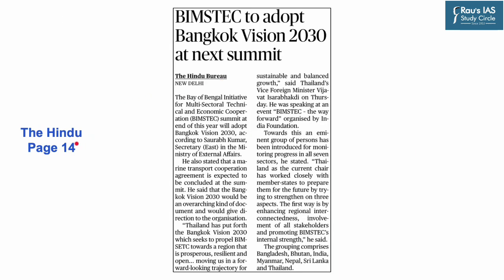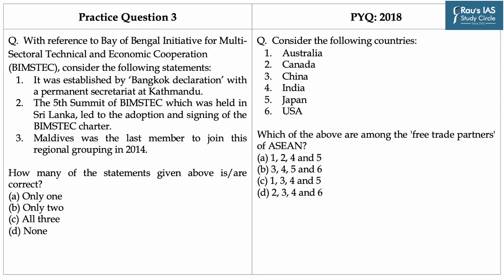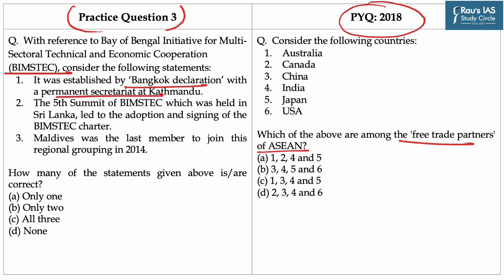Moving on to the third article of the day, which appeared on page 14 of today's Hindu newspaper. According to this article, the Bay of Bengal Initiative for Multisectoral Technical and Economic Cooperation or BIMSTEC Summit will be held at the end of this year and it will adopt the Bangkok Vision of 2030. Regional and multilateral groupings and India's participation in them are important for UPSC, as seen from this PYQ of 2018 on Free Trade Partners of ASEAN. Here is practice question number 3: With reference to BIMSTEC, consider the following statements. Statement 1: It was established by Bangkok Declaration with a Permanent Secretariat at Kathmandu.